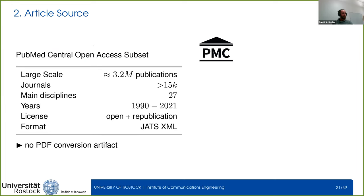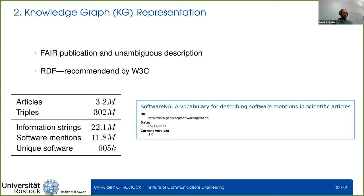We applied this pipeline on the PubMed Central Open Access subset — a large-scale dataset of 3.2 million publications from more than 50,000 journals. Articles can be divided into 27 major scientific domains, and we considered all articles published between 1990 and 2021. The dataset has an open license allowing republication, and all articles are available in XML format, meaning we don't have to deal with PDF-to-text conversion artifacts.